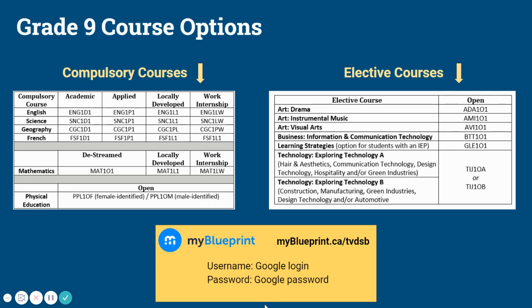Course selection is done with the help of grade 8 teachers. High school students take 8 courses; for grade 9, 6 are compulsory and 2 are electives. The compulsory courses are English, Science, Geography, French, Math, and Phys Ed. Course levels are Academic, Applied, Locally Developed, and Work Internship. Math is de-streamed — you choose from de-streamed (MAT 101), Locally Developed, or Work Internship. The Work Internship program is teacher-recommended and structured so part of the day is with the same students in the same classroom for more consistency.